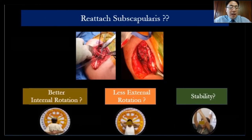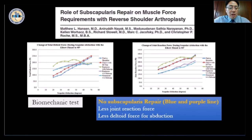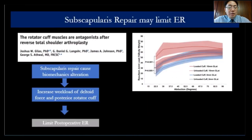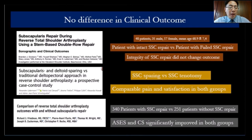For subscapularis repair, the topic is controversial. Repair may improve internal rotation, may limit external rotation, or may improve stability. Some argue that after repair the subscapularis acts as an adductor because the center of rotation changes — giving more tension. Not repairing results in less joint reaction force and less deltoid force for abduction. Subscapularis repair may also limit external rotation. Multiple large series have found no difference in clinical outcome between repair and no repair, though Dr. Zhuhan Oh found better stability at all angles of motion with repair.